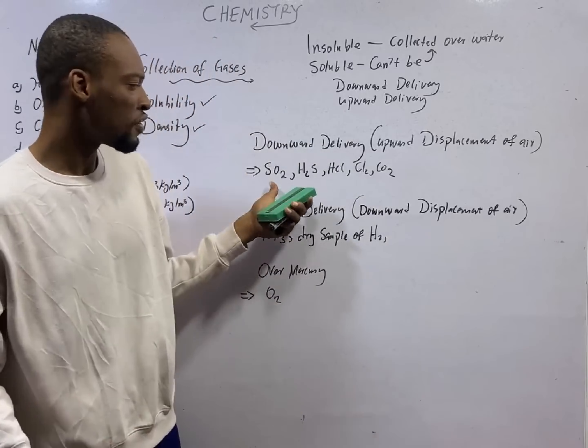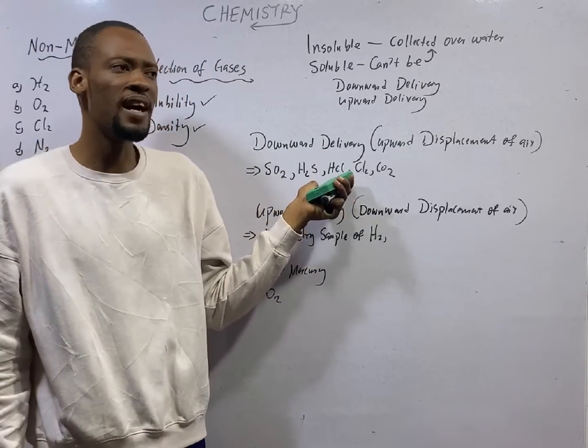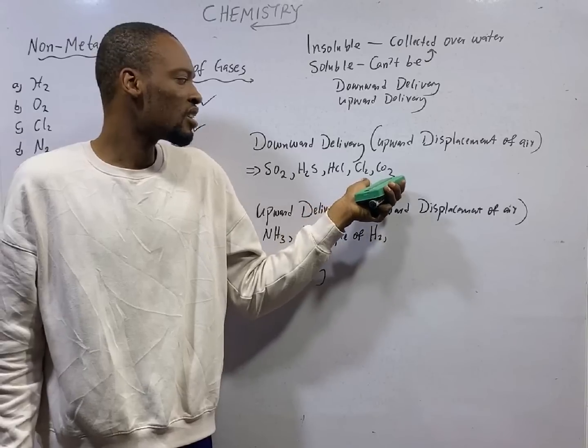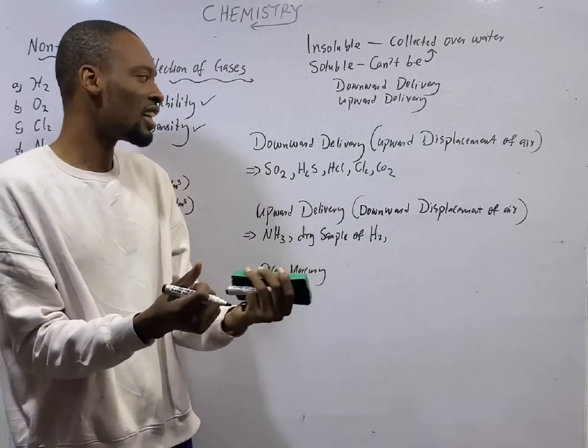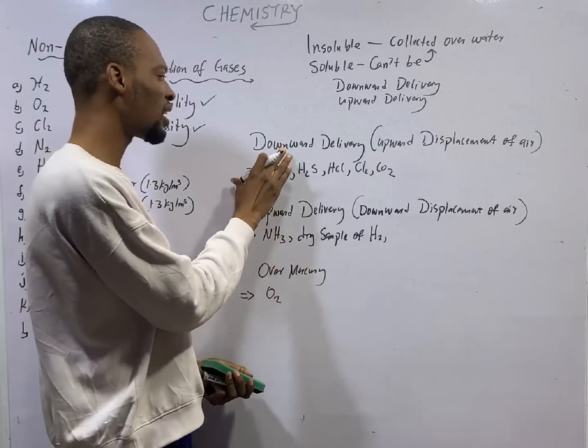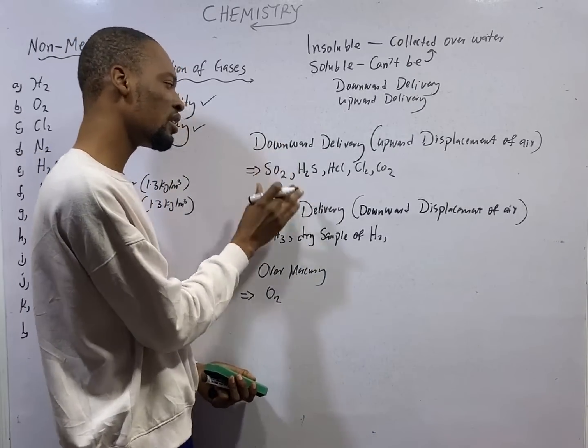Gases like sulfur dioxide (SO2), hydrogen sulfide (H2S), hydrogen chloride (HCl), chlorine gas (Cl2), and carbon dioxide (CO2), they are denser than air. As such, they are collected by downward delivery.